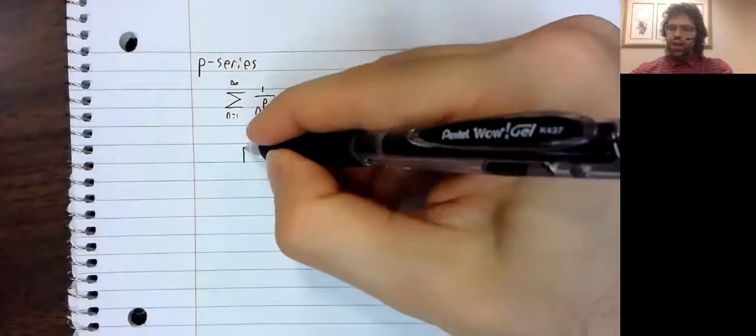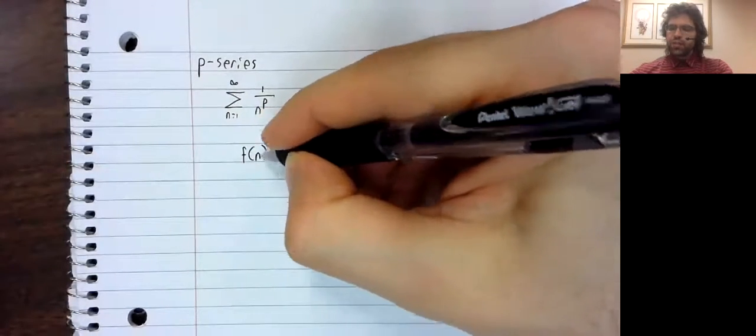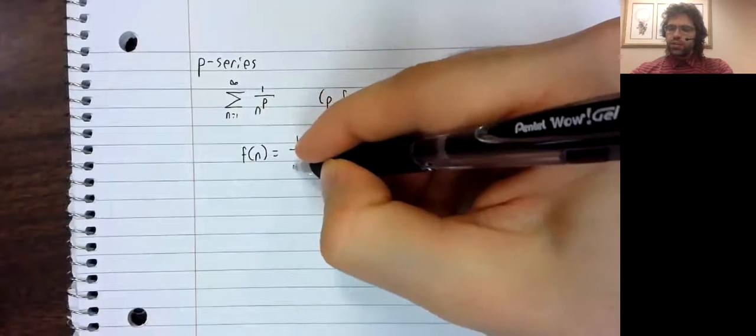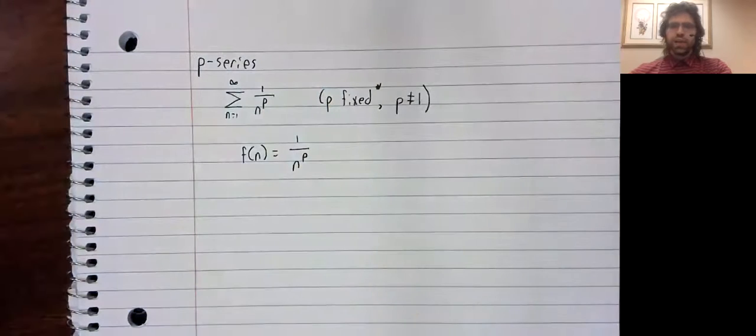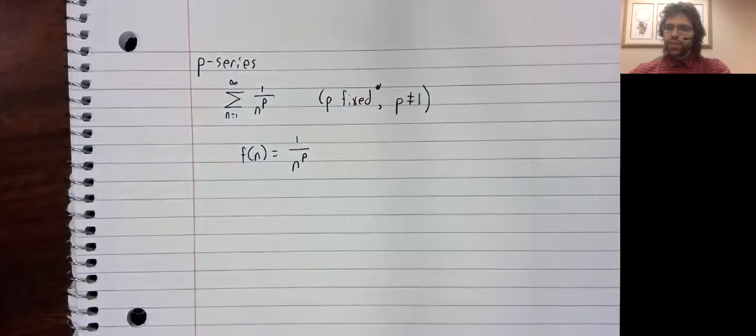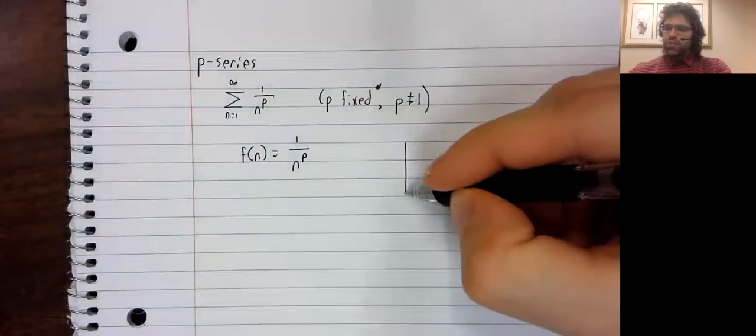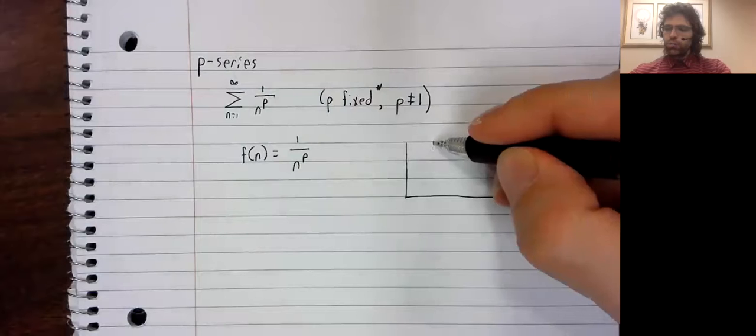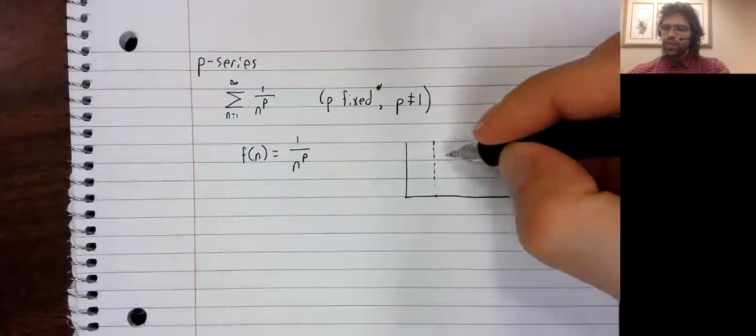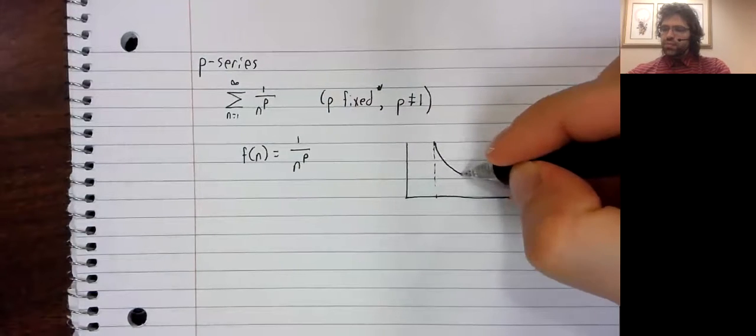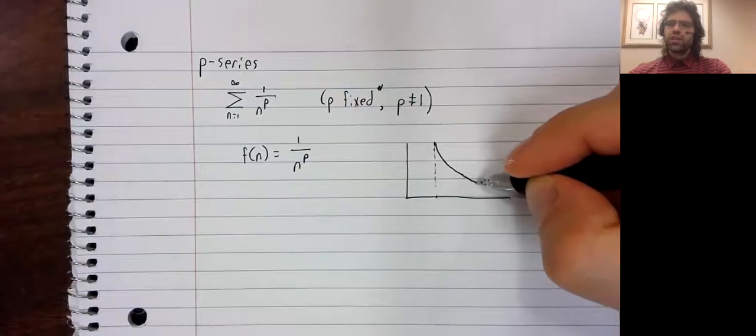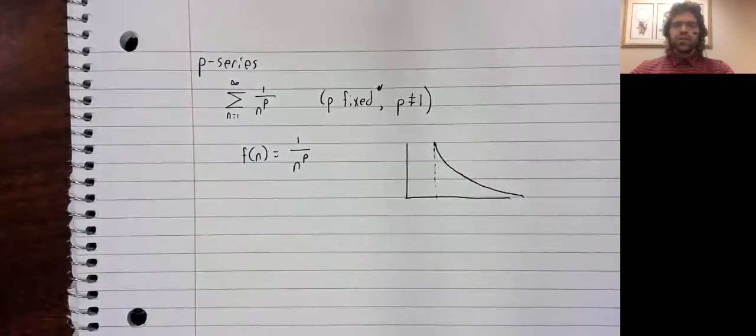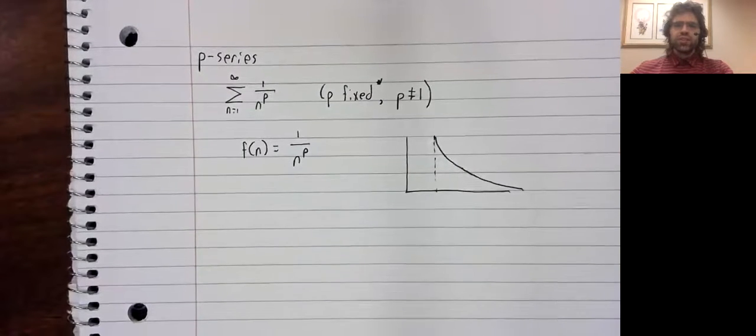We define F of N equals one divided by N to the P. And as long as we stay away from N equals zero, this is a decreasing continuous positive function and the integral test is appropriate.